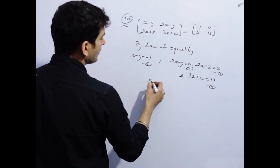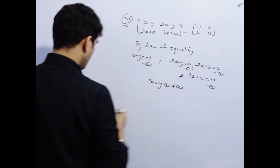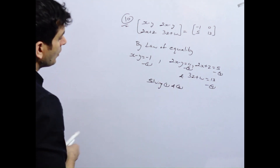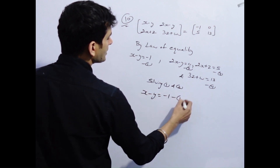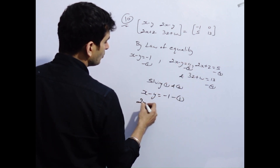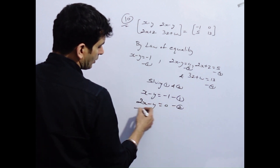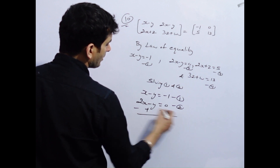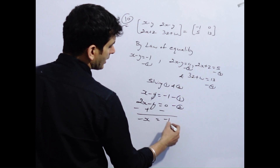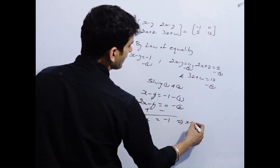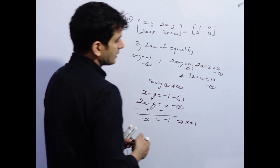Solving equations 1 and 2: x minus y equal to minus 1, and 2x minus y equal to 0. Subtract करने पर y cancel हो जाएगा — minus 2x plus x = minus x = minus 1, तो x की value 1 आएगी.